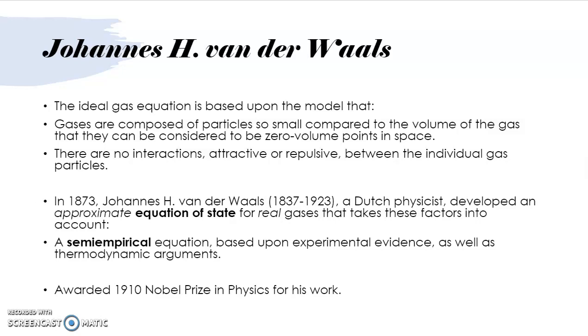Johannes H. van der Waals is the scientist who corrected the ideal gas equation. The ideal gas equation is based upon the model that gases are composed of particles so small compared to the total volume of the gas that they can be considered to be zero-volume points in space. There are no interactions, attraction or repulsion between the individual gas particles. In 1873, van der Waals, a Dutch physicist, developed an approximate equation of state for real gases that takes these factors into account, a semi-empirical equation based on experimental evidence as well as thermodynamic arguments. He proposed van der Waals equation for real gases, and for his work he was awarded the 1910 Nobel Prize in Physics.